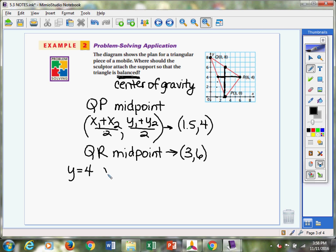And then we have a vertical line. Remember, vertical lines always start with X equals. Well, where is it crisscross on the X? That's 3. And so the point of intersection is right here. That's going to be where the sculpture will be balanced. That's the center of gravity for that particular object. And the name of that point is 3,4. And that's what we were looking for. Where should the sculptor attach the support at point 3,4?